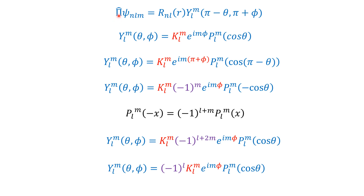When the parity operator acts on psi_nlm, it will give R_nl(R) — unchanged — times Y_l^m evaluated at pi minus theta and phi plus pi. Now Y_l^m(theta, phi) equals K_lm times e^(i m phi) times P_l^m(cos theta). Replacing phi with phi plus pi and theta with pi minus theta: